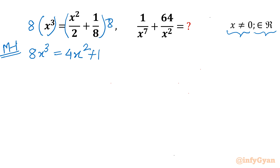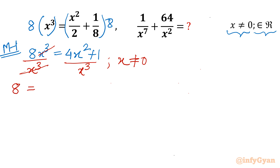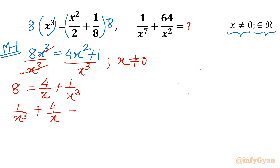Now since x is non-zero, I can divide both sides by x³. Cancelling x³ on the left gives us 8. The right-hand side becomes 4 over x plus 1 over x³. So we can write: 1/x³ + 4/x = 8.